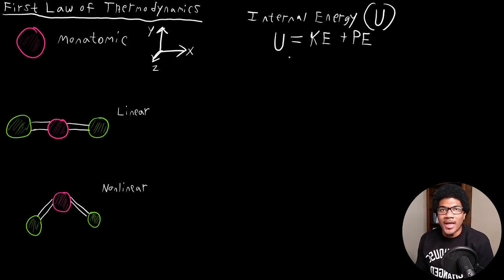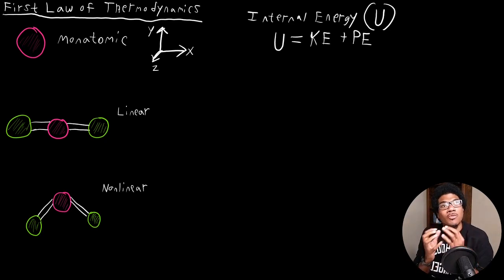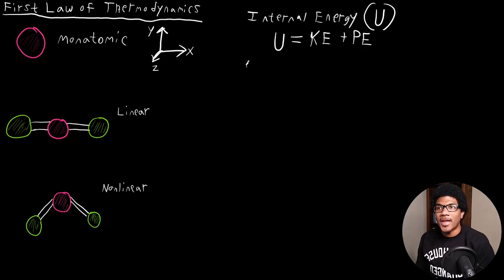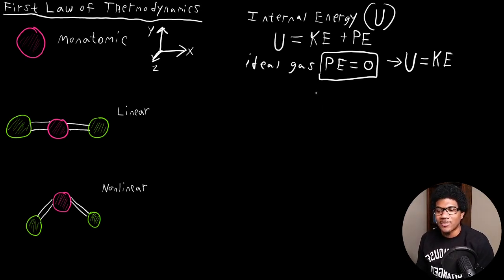If we assume an ideal gas, remember that one of the assumptions of the ideal gas law is that the molecules don't interact with one another. We're assuming they're just billiard balls — they bounce around and hit each other, but there's no potential energy of their interaction. So for an ideal gas, PE is going to be equal to zero. That means the internal energy is only going to depend on the kinetic energy contribution, which simplifies our equations greatly.